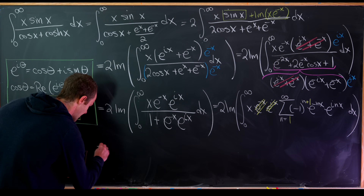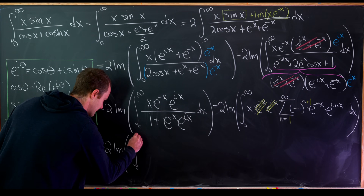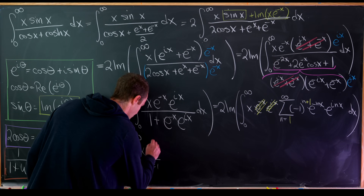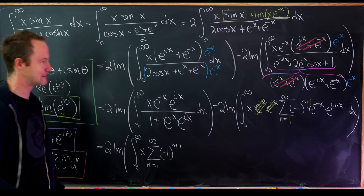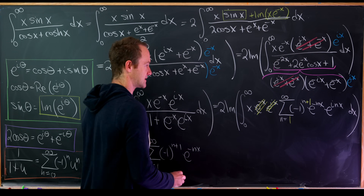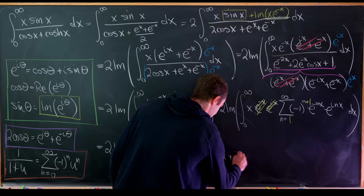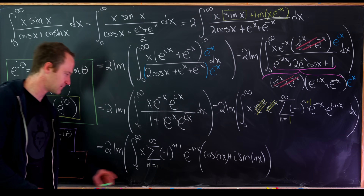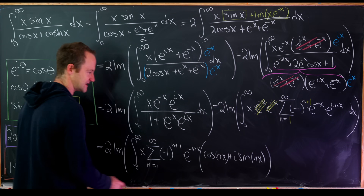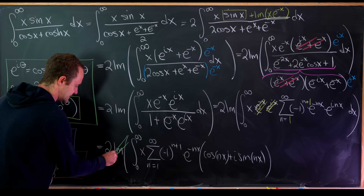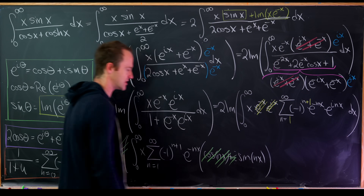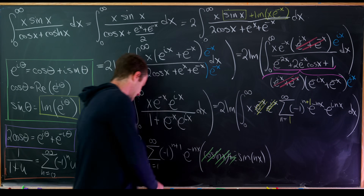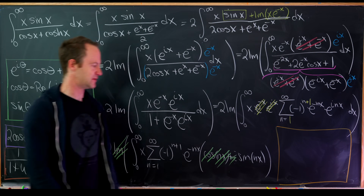So this is two times the imaginary part of the integral from zero up to infinity. We're left with x times the sum as n goes from one to infinity of minus one to the n plus one times e to the minus n x times the quantity cosine of n x plus i times sine of n x. Taking the imaginary part makes the cosine part disappear along with the imaginary unit, leaving e to the minus n x times sine of n x. One last small step before the next board: a substitution. Let n times x equal t, so x equals t over n and dx equals dt over n.